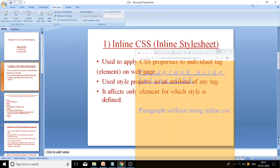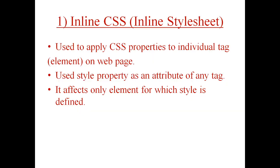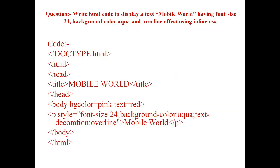Now let's see one more example for inline CSS. The question is: write HTML code to display the text 'Mobile World' having font size 24, background color aqua, and overline effect by using inline CSS. So by using inline CSS you have to display 'Mobile World' with three CSS properties: font-size 24, background color aqua, and overline text decoration.